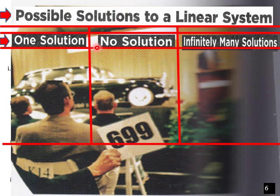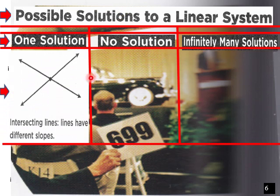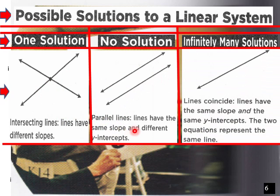Possible solutions to a linear system: one solution, no solution, infinitely many solutions. One solution is an intersection, no solution is when they're parallel, infinitely many is when they're the same line.